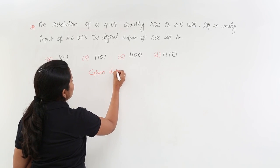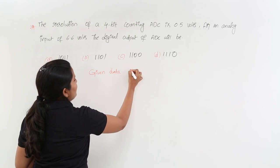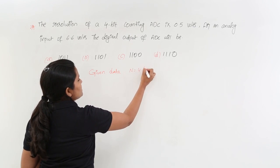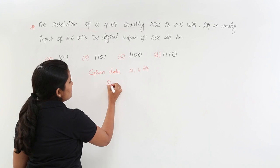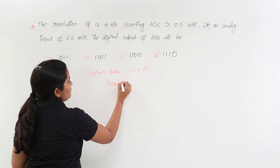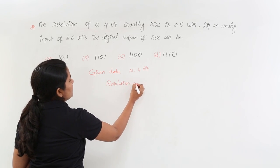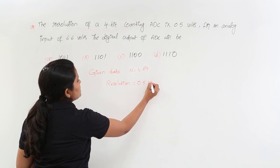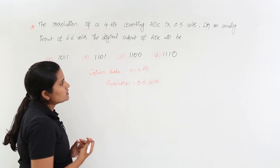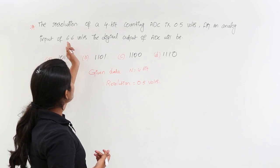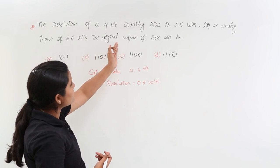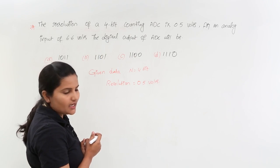Given data is: n is equivalent to 4 bits first of all, and resolution is equivalent to 0.5 volts. Next, for an analog input of 6.6 volts, the digital output of ADC will be—they are asking.